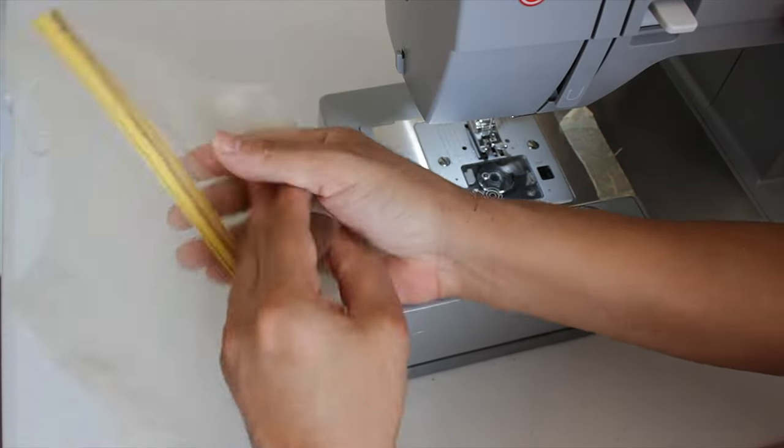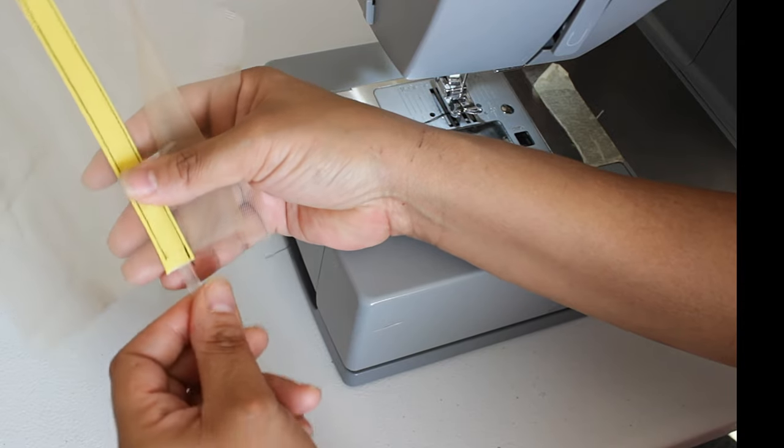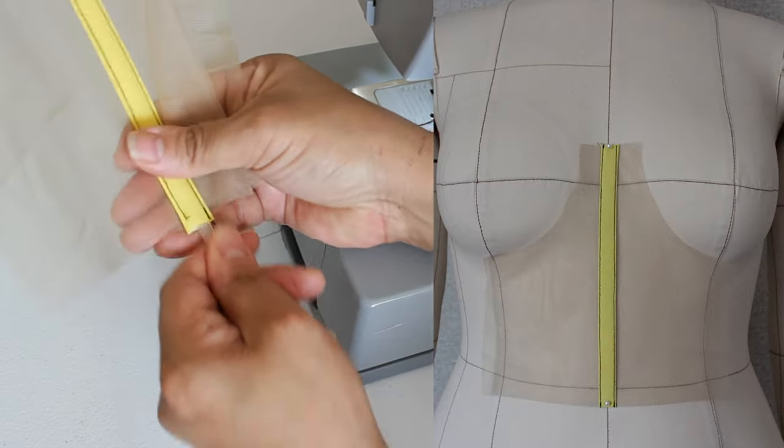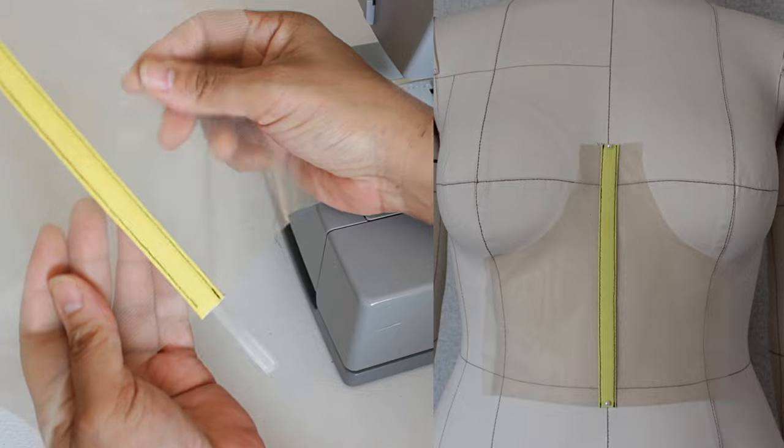This is how it looks. Don't forget to put that plastic boning in so it could be a little bit more stronger. I think this is actually better than just having the Rigilene by itself.